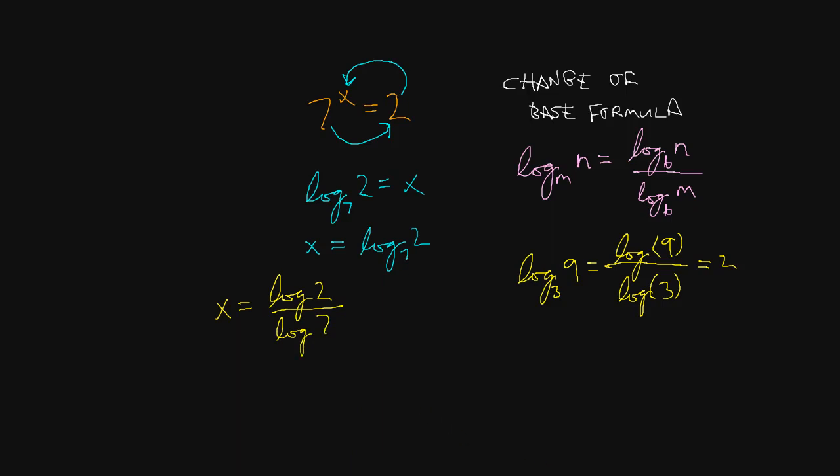This is not equal to, you don't need to write this, but I just want to show you, this is not the same as log of 2 divided by 7. That's known as the quotient property, and that's part of the properties of logarithms. That was in a whole other lesson, so please don't make that mistake. Note to self. You know what I'm saying? Okay, so back to this. So let's go ahead and do the math and see what that turns out to be.